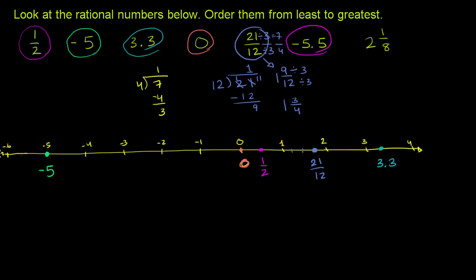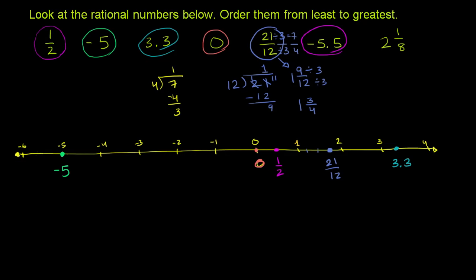Let's say that this is negative 6. Negative 6 and our number line will keep going to smaller values. Let me scroll to the left a little bit. Negative 6. So then if we go to negative 5.5, it's smack dab in between negative 5 and negative 6. So this is negative 5.5 right over there.